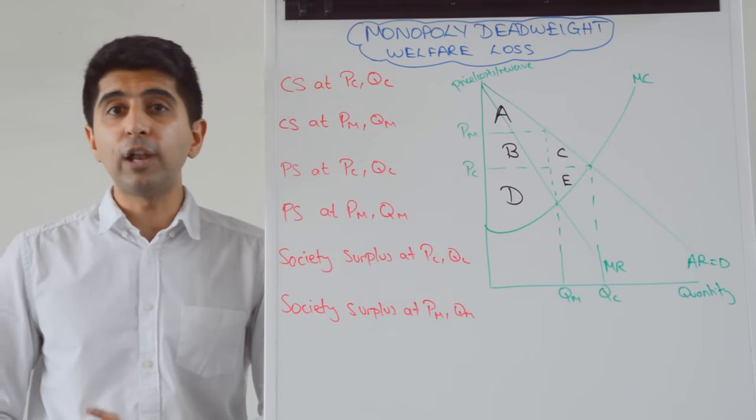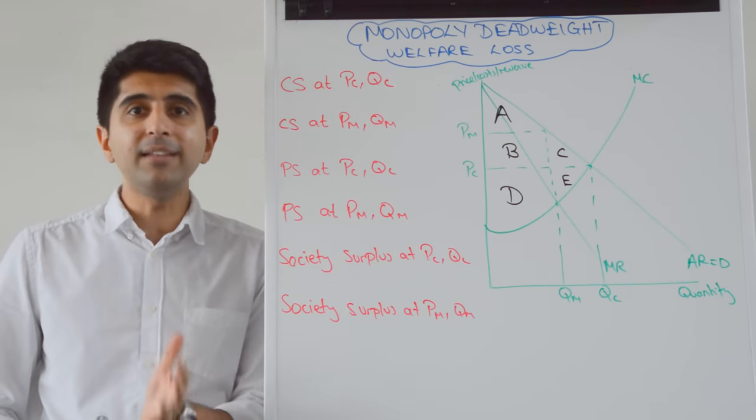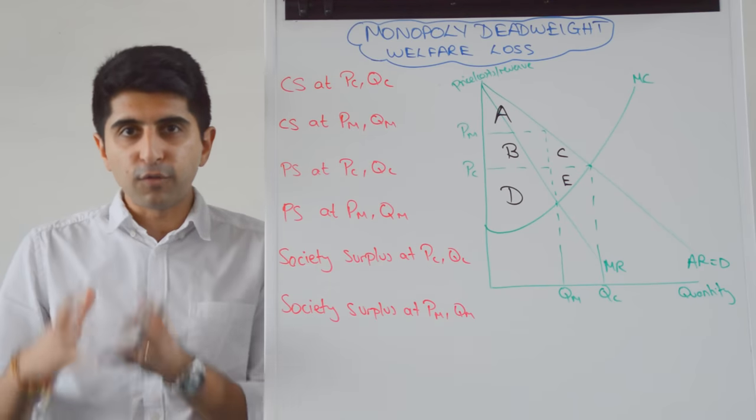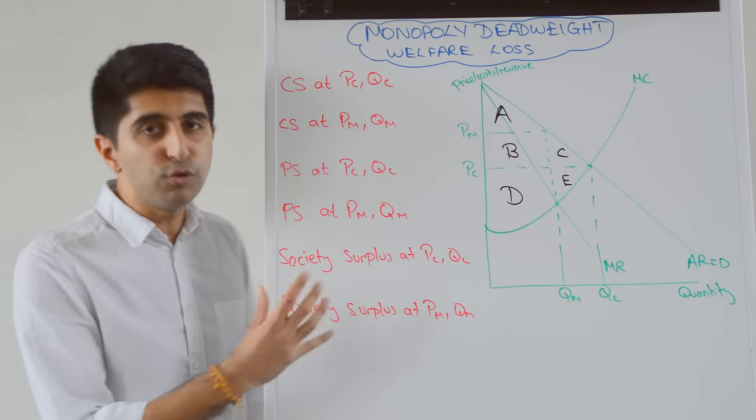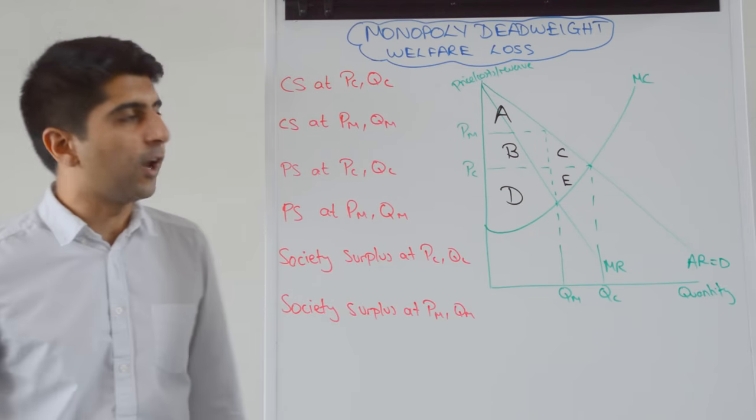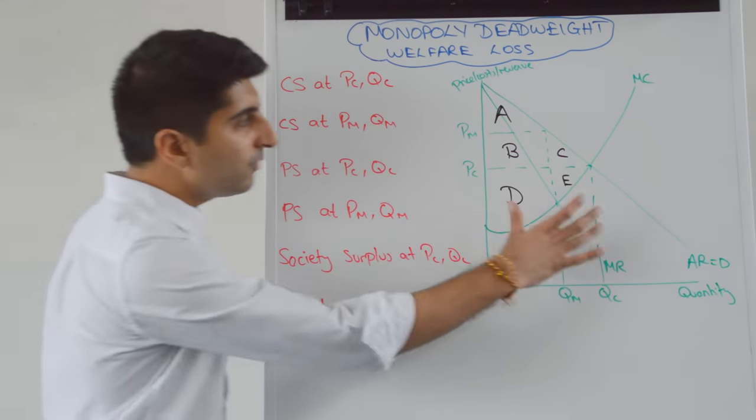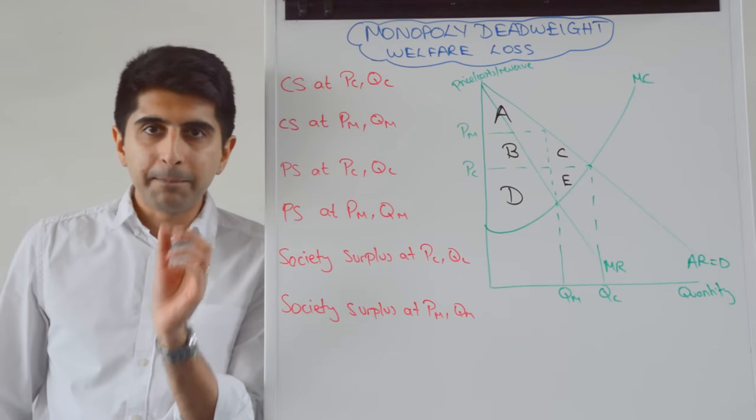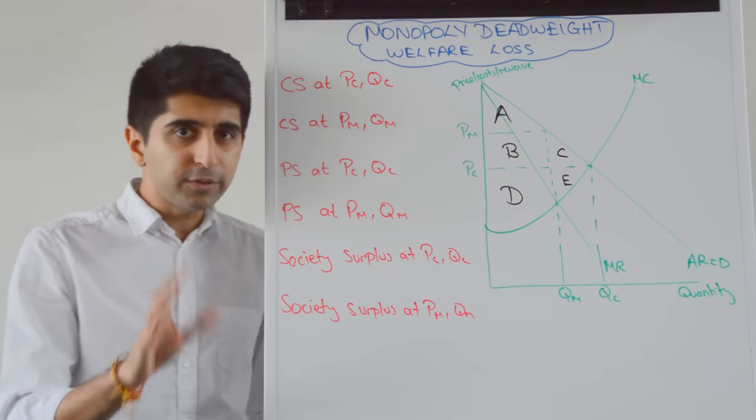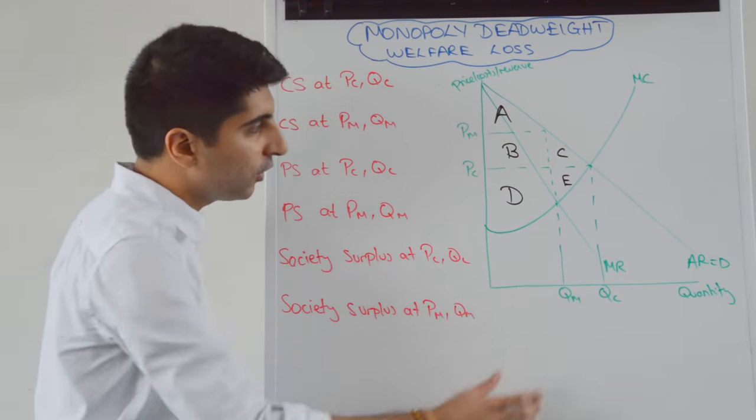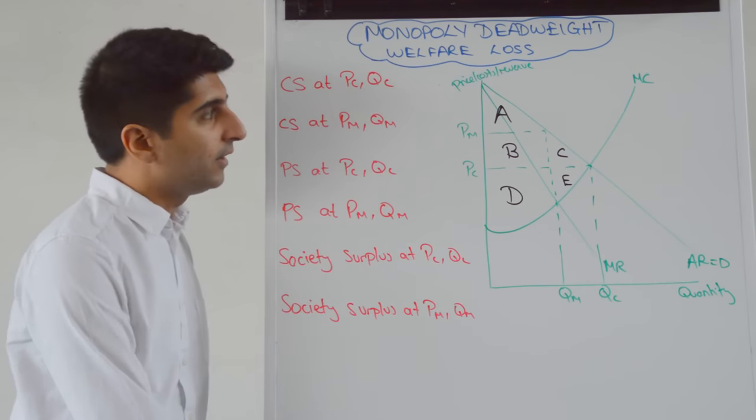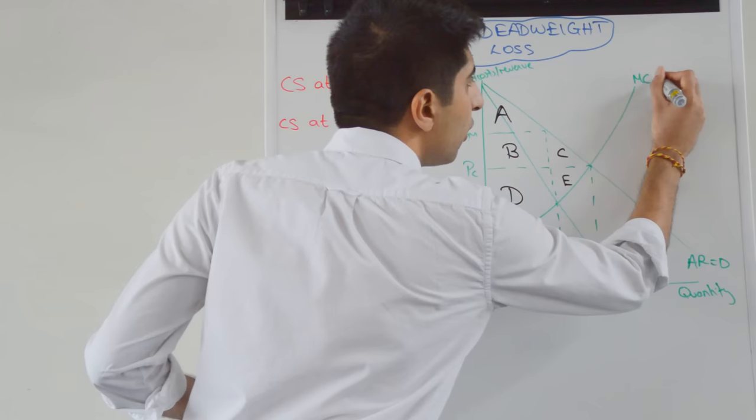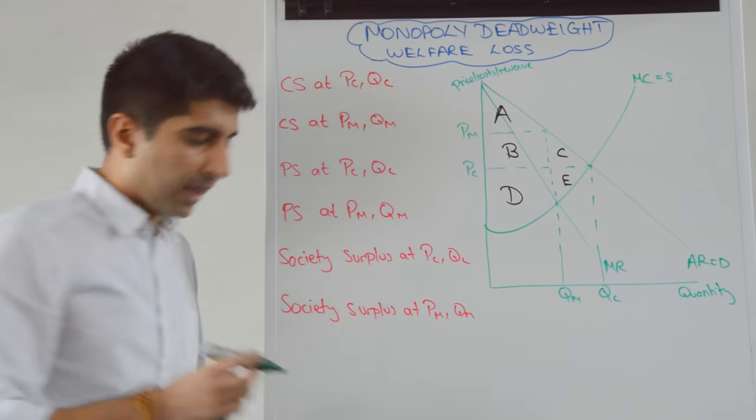So if there is a deadweight welfare loss it means compared to competitive outcomes monopolies are reducing the total level of society's surplus and we are going to prove that in this video on this diagram here. What I've drawn on the right hand side is a basic monopoly diagram without an average cost curve, just the marginal cost and the two revenue curves. For the sake of this diagram you need to be aware that the marginal cost curve is equal to supply.